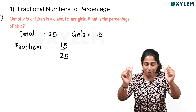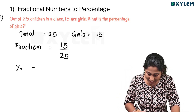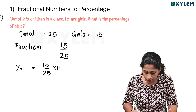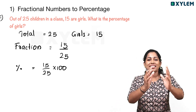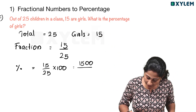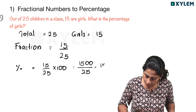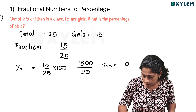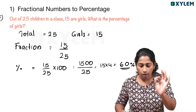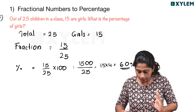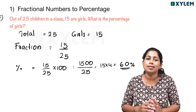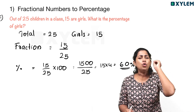How do we get percentage? Percentage is equal to 15 by 25 as a fraction. How do we get 100? 1500 divided by 25. 15 into 4 — and that is equal to 60 percent. 60 percent is the answer. 1500 divided by 25: 25 times 4 is 100, then 15 times 4 is 60 percent.